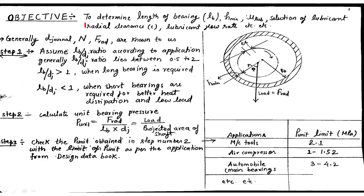First, see the objective of the problem. Our objective is to find the length of the bearing lb, the minimum fluid film thickness denoted by h_min, and the viscosity of the lubricant denoted by mu_lub. We also have to select a suitable lubricant, find out the radial clearance denoted by small c, and the lubricant flow rate.